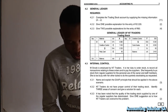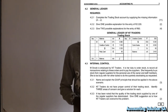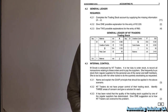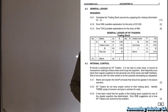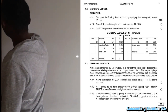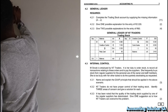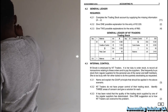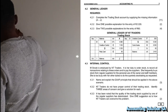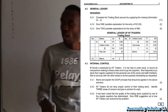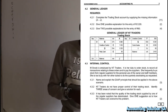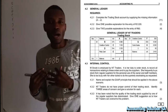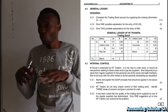Question 4.2.1 says we have to complete the trading stock account by supplying the missing information from letter A to J. We have been given a trading stock account with items A through J that need to be filled in. You have to make sure that you know the format of the trading stock account because you are not going to be given any additional transactions to answer these questions.